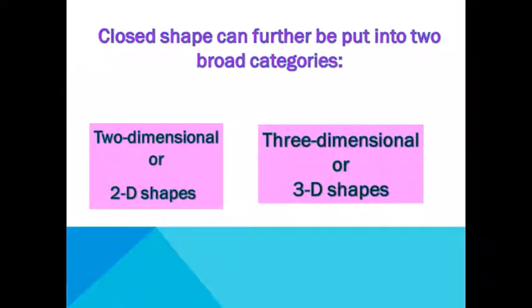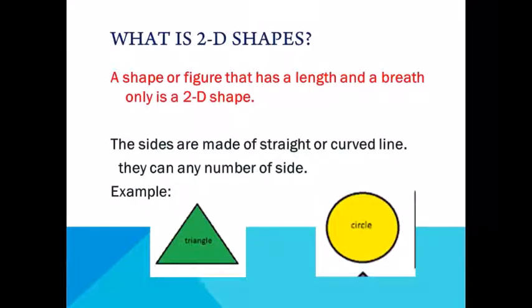Closed shapes can be further put into two broad categories. First one is the two-dimensional shape or 2D shape and second one is the three-dimensional or 3D shape. What is a 2D shape? A shape or figure that has length and breadth only is a 2D shape. The sides are made of straight or curved lines. They can have any number of sides.